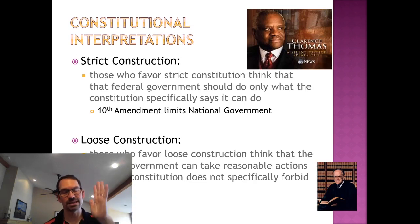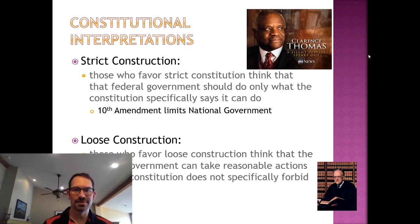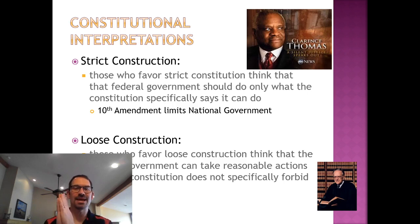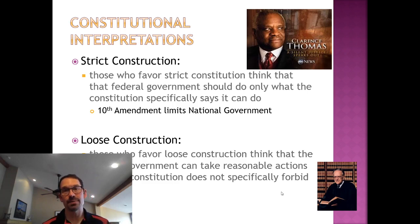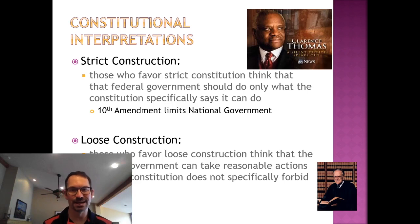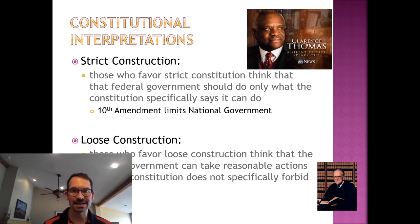You have to understand the difference between strict construction and loose construction. Strict construction means reading the Constitution literally — Clarence Thomas is a strict constructionist. If it doesn't say the national government can do it, he would say they can't. If you can't read it, you can't do it — if it's not listed, it's not allowed. A loose constructionist would say if it's not forbidden, you can do it. Harry Blackman — the justice who wrote Roe v. Wade — would say: if it's not forbidden, you can do it. Clarence Thomas would say: if it's not written, you can't do it.